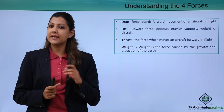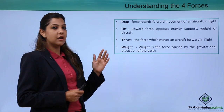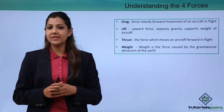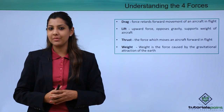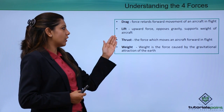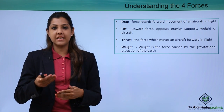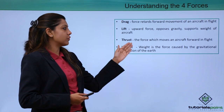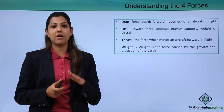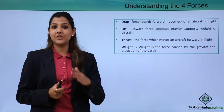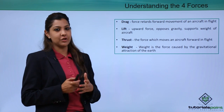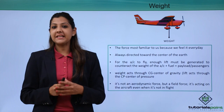Drag is the force that retards or stops the forward movement of an aircraft; it must exist for thrust to be effective. Lift is an upward force that opposes gravity and supports the weight of the aircraft, helping it lift off the ground. Thrust is the force that moves the aircraft forward. Weight is the force caused by gravitational attraction of the earth, always directed towards the center of gravity.